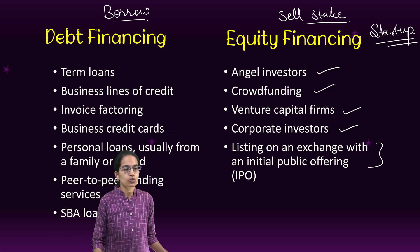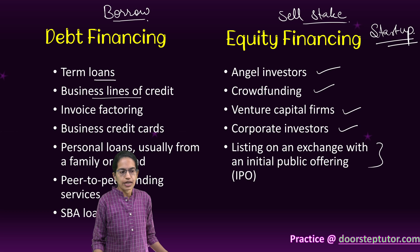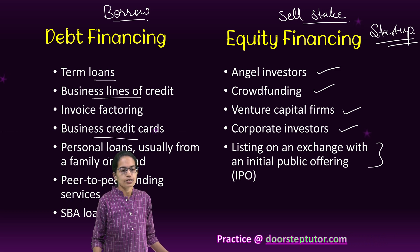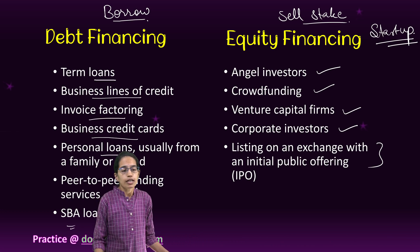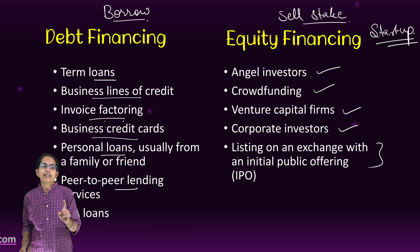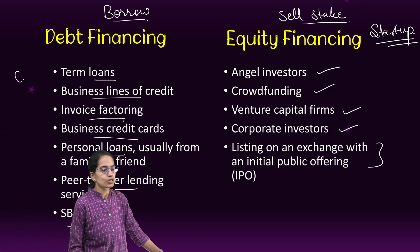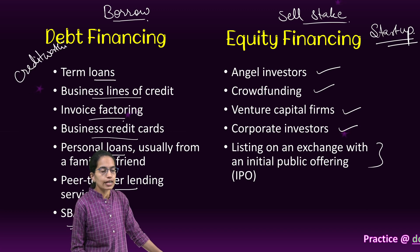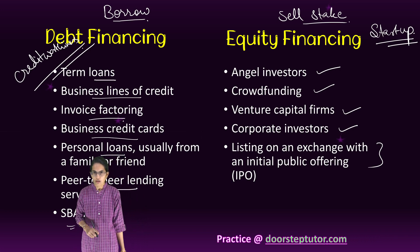Under debt financing, common ways to borrow include loans, business lines of credit, business credit cards, personal loans, peer-to-peer lending, SBA loans, and invoice factoring. All of these indicate that this can happen only where there is good credit worthiness and confidence that you would repay the amount within a given duration of time.